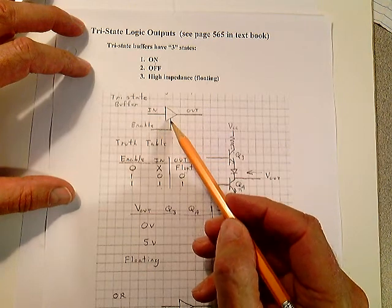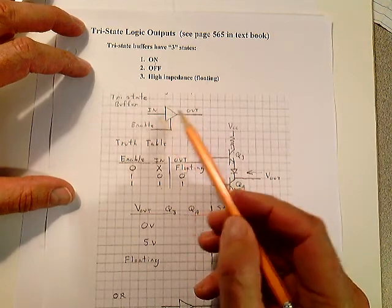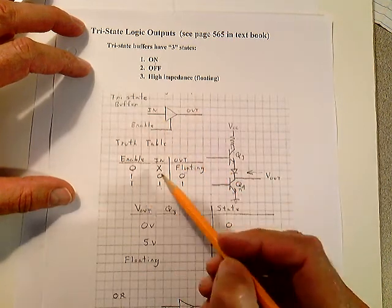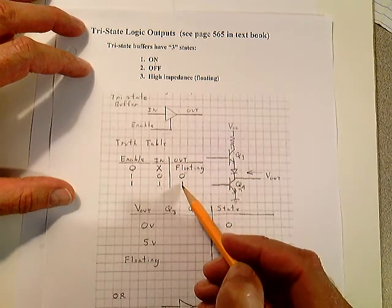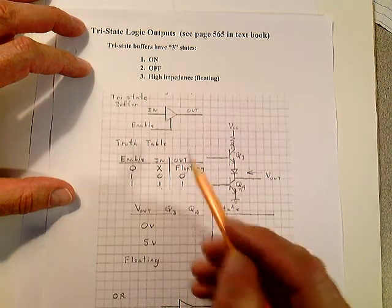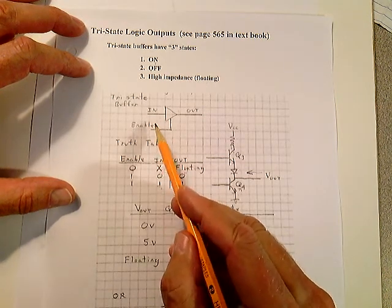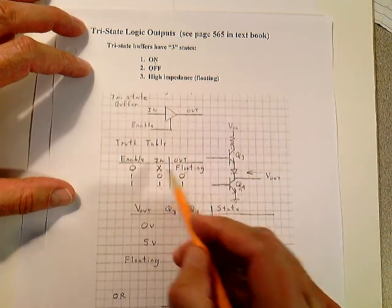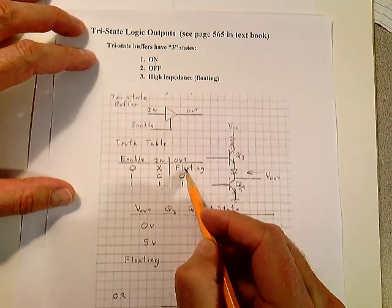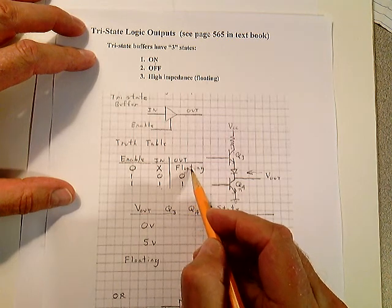If the enable is not there and it's a regular buffer, then you put a zero in, you get a zero out. You put a one in, you get a one out. But let's throw the enable in there where if the enable is low, I don't care what the input is. The output will be floating. And I'll show you what I mean by that in a minute.